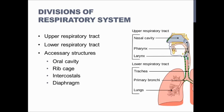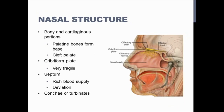The nasal structure has both bony and cartilaginous portions, so it's made of part bone and part cartilage. The palatine bones — your palate, the roof of your mouth — form the base of the nasal cavity. Sometimes during gestation, the fetus might not develop completely properly and those palatine bones might not fuse in the middle at the top, and that's how people are born with cleft palates. They would have a lot of problems with swallowing and maybe with speech.